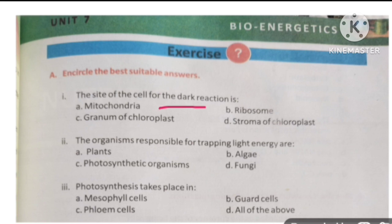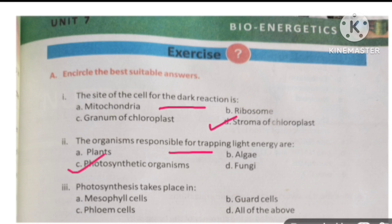Look at MCQ number 1. The site of the cell for the dark reaction is stroma of chloroplasts. MCQ number 2: the organisms responsible for trapping light energy are photosynthetic organisms.